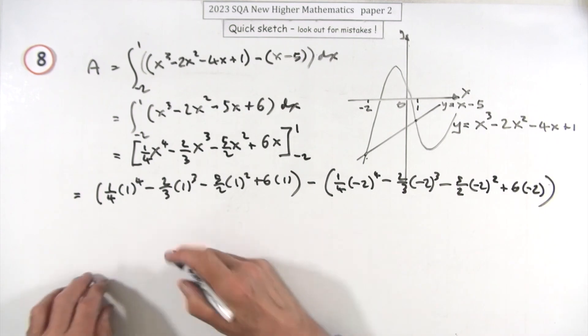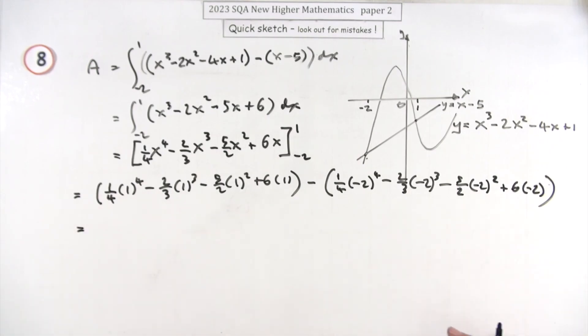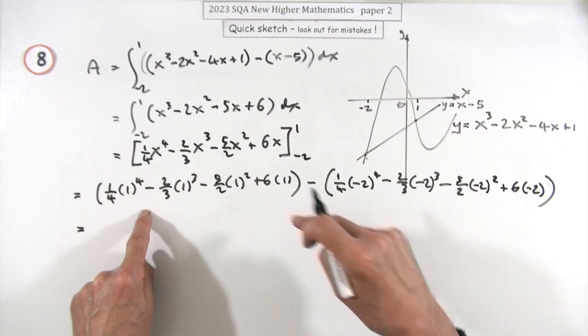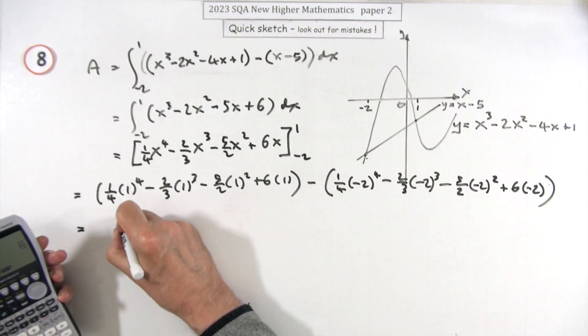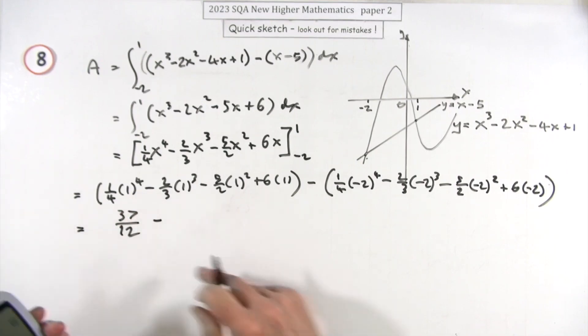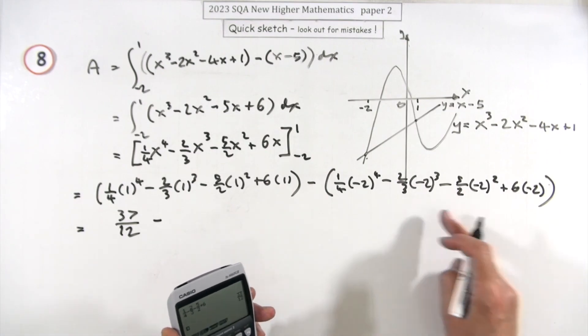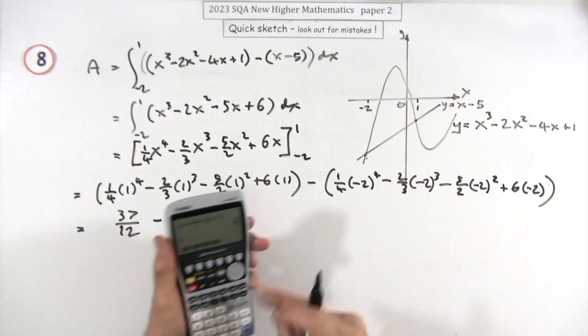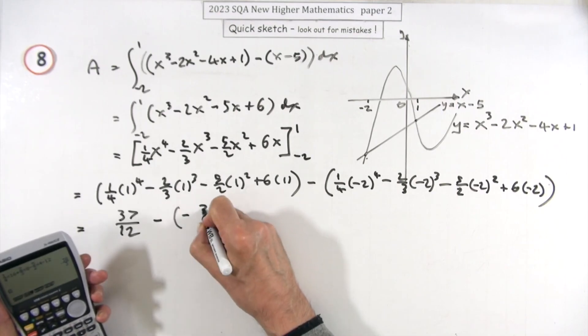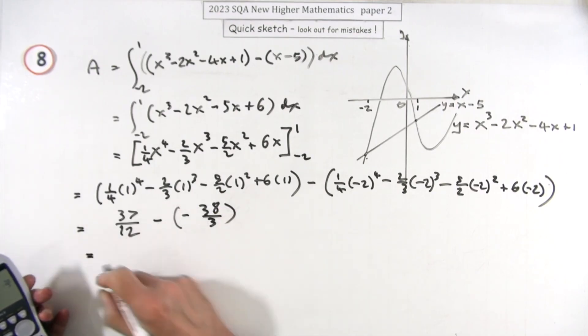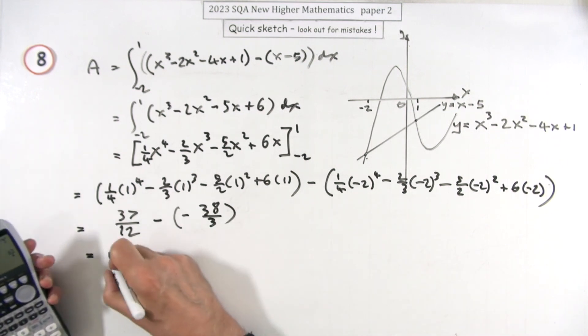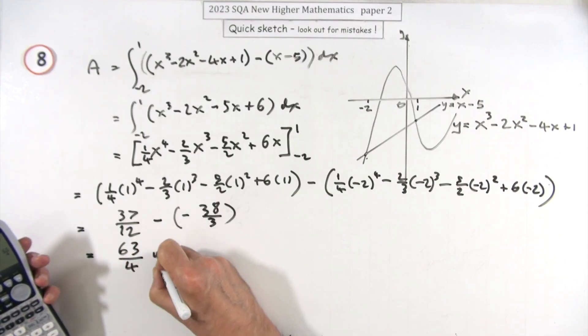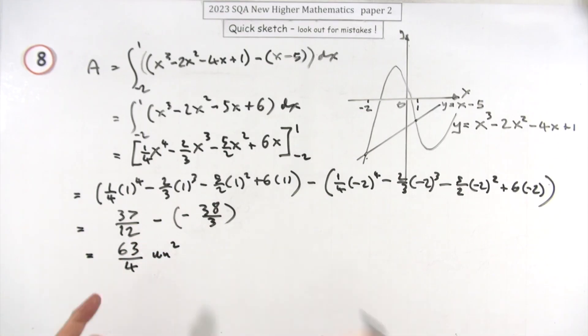Now you can press all that in one go and get to the answer, or you could put them in in two parts. You know, do this and then you can reuse your calculation just changing some numbers. So doing that one first gives you 37/12, then take away whatever this is. I'll go back and I'll put in all these 2s. So putting them in gives me -38/3, and I'll just carry that subtraction. So just using that, it gives me 63/4 units squared, unless you wanted to put 15 and 3/4, but that would do you.